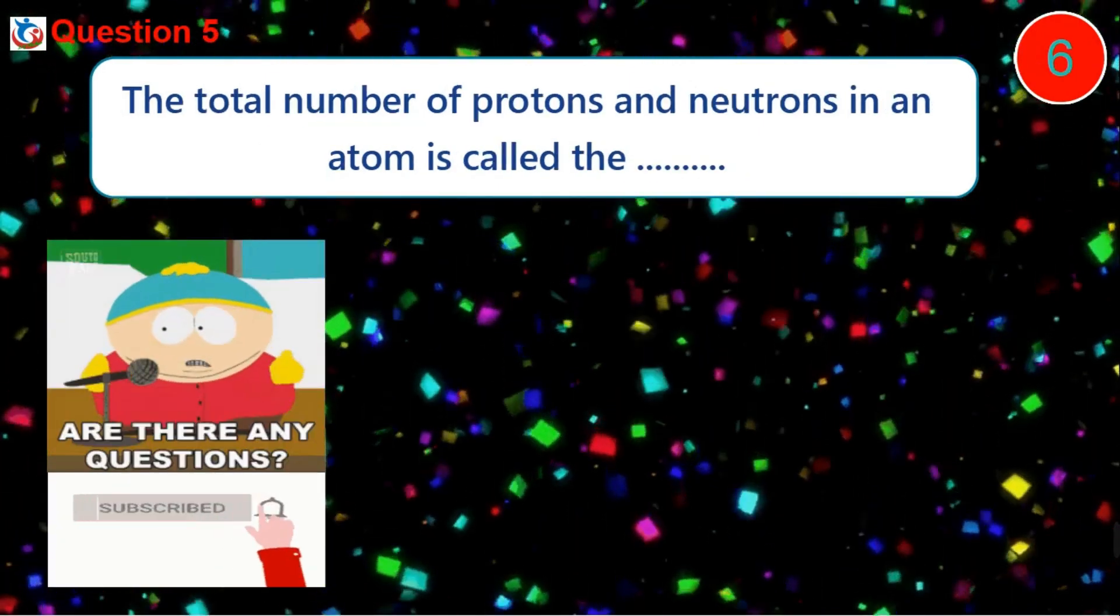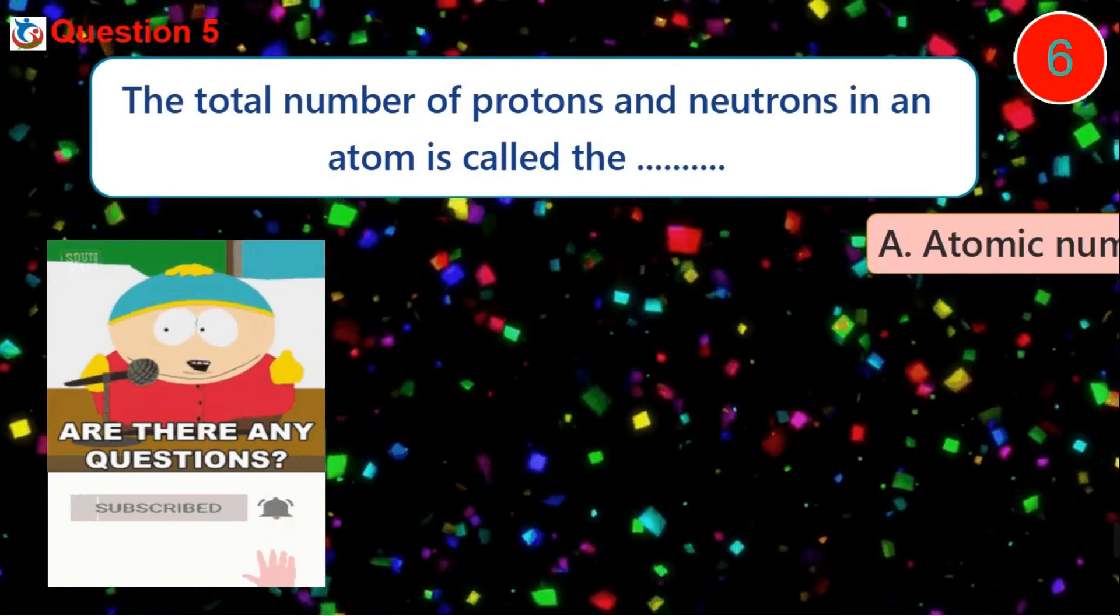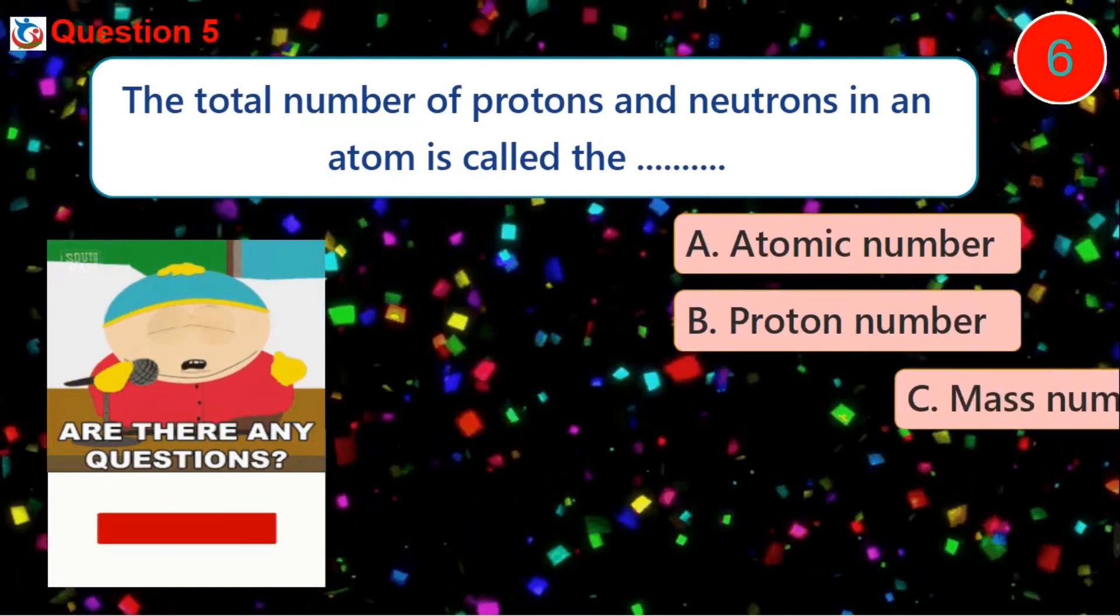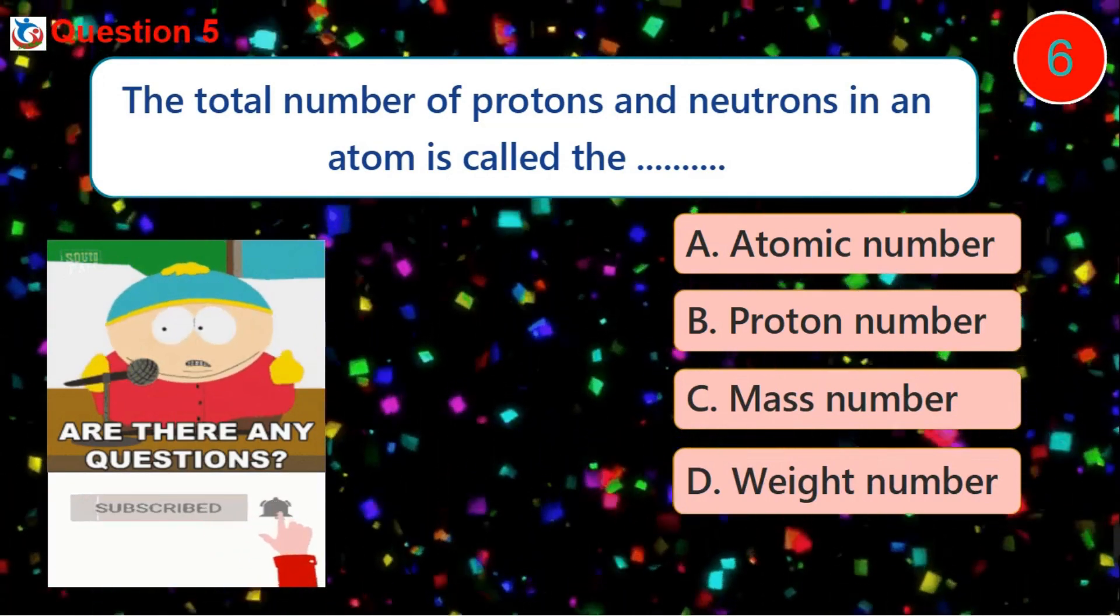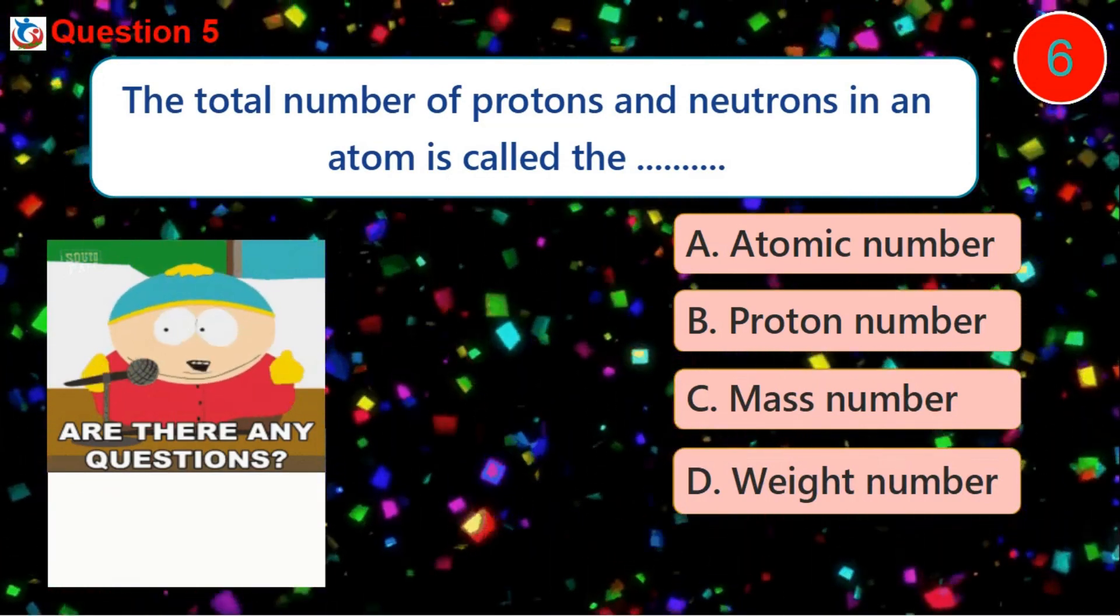Question 5. The total number of protons and neutrons in an atom is called the dash. A. Atomic number B. Proton number C. Mass number D. Weight number.